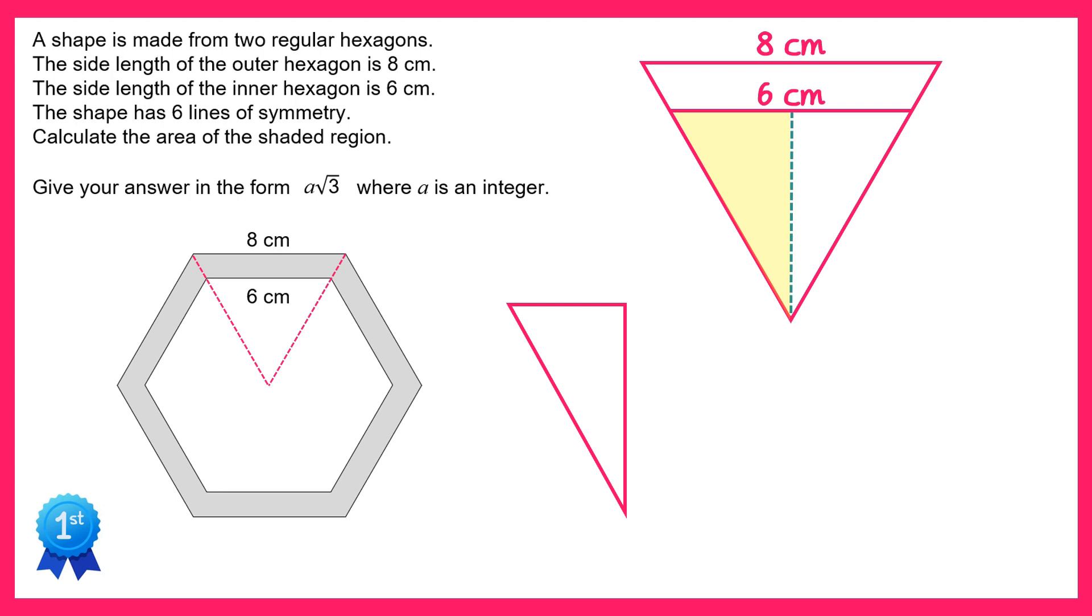We know the angle in the top left is 60 degrees because the whole triangle is an equilateral triangle. We know the length at the top is half of six, so that's three centimeters. And if we label on some sides, this would be the hypotenuse, this would be the opposite, and this would be the adjacent.